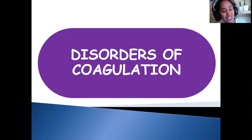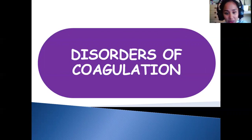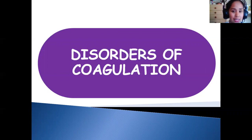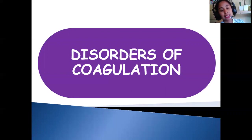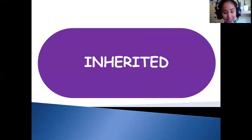So let's discuss disorders of coagulation. In this lecture, hopefully less than an hour, we will discuss the inherited disorders of coagulation and acquired disorders. Inherited means inborn or congenital — mostly genetic. Acquired includes liver diseases, autoimmune antibodies, massive transfusion, disorders of fibrinolysis, and disorders of thrombosis or excessive clot formation.